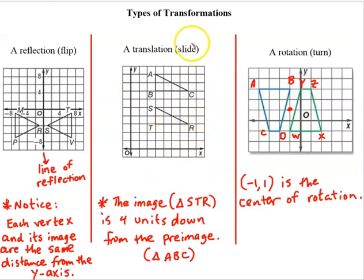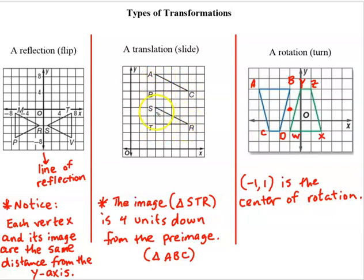Let's run through the three types of transformations we'll be discussing. For a translation, you could think of the word slide. Here's an example of triangle ABC being moved — all the points on it are shifted. You'll know a translation has taken place if the image is in its same basic position: it's not flipped over, not upside down, not turned sideways. Every point on ABC has been moved to create a new triangle called STR. It's a movement without turning or flipping the original figure.